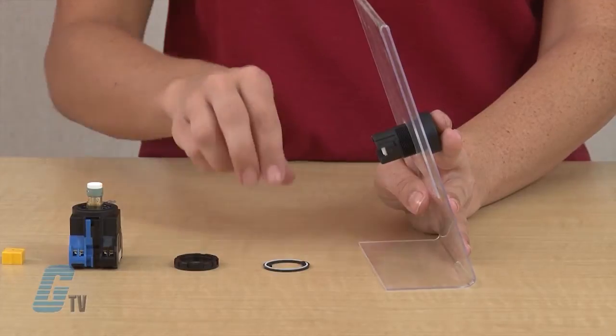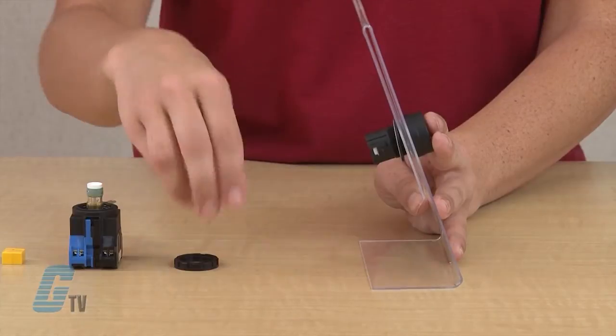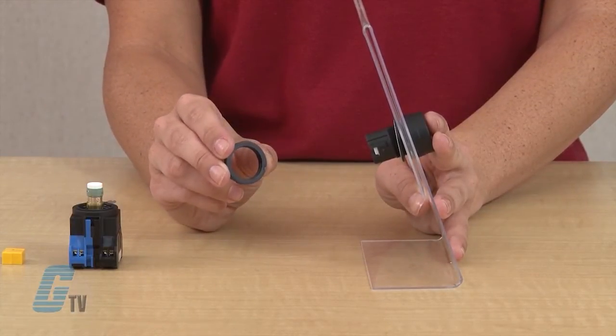To reassemble the push button, slide the anti-rotation ring on and then spin the fastener until it is tight around the operator.